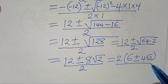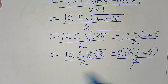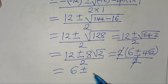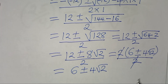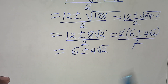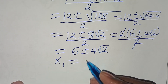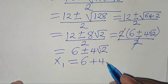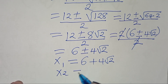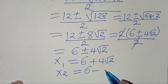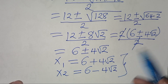This gives us two values: x₁ = 6 + 4√2 and x₂ = 6 − 4√2.